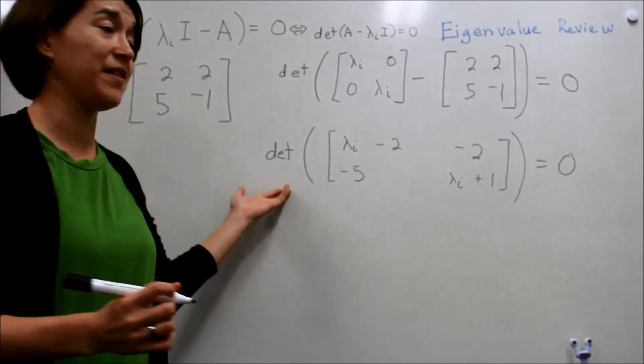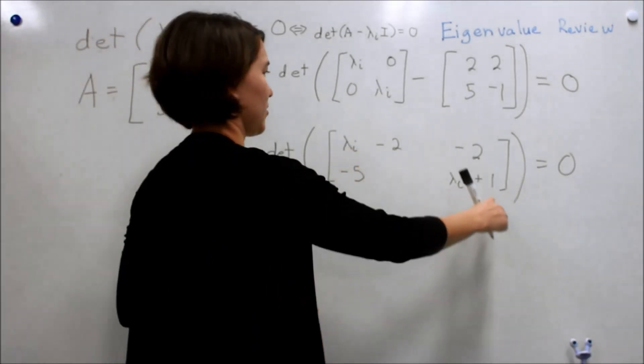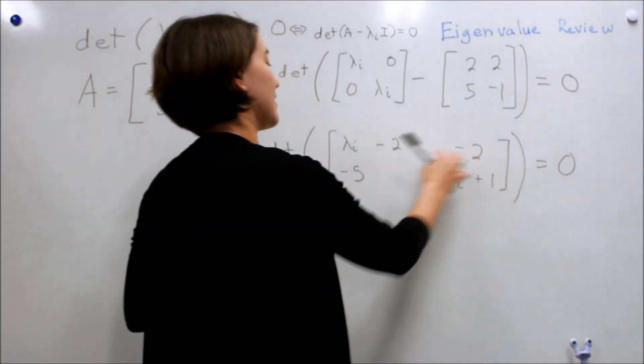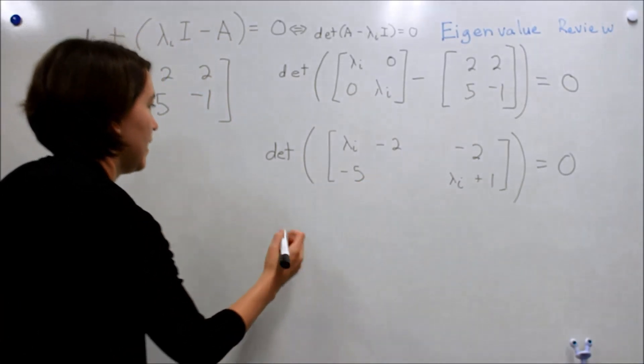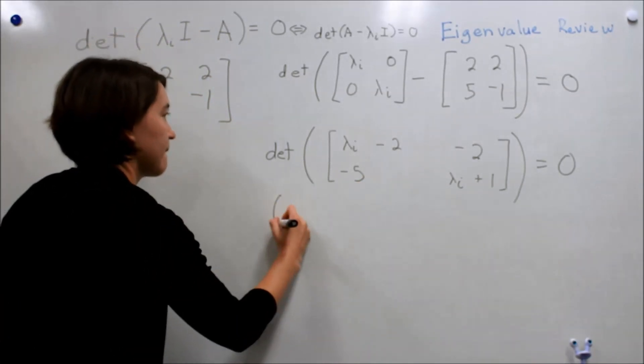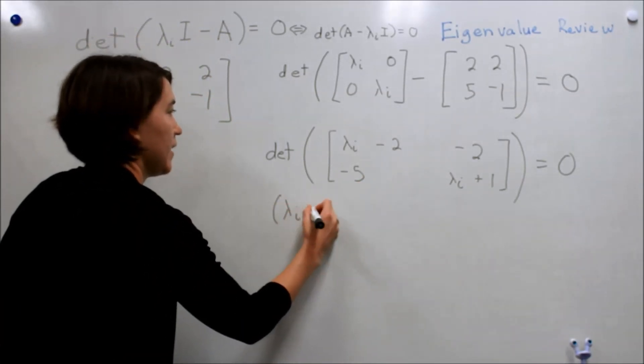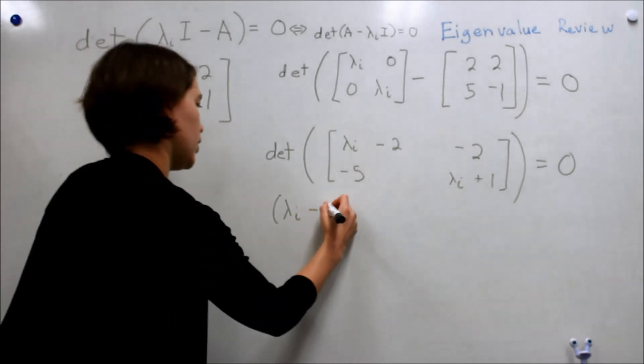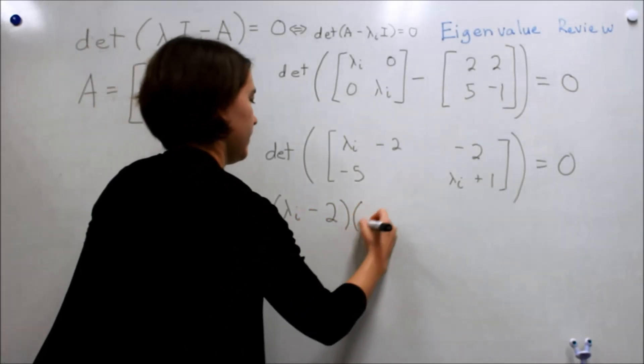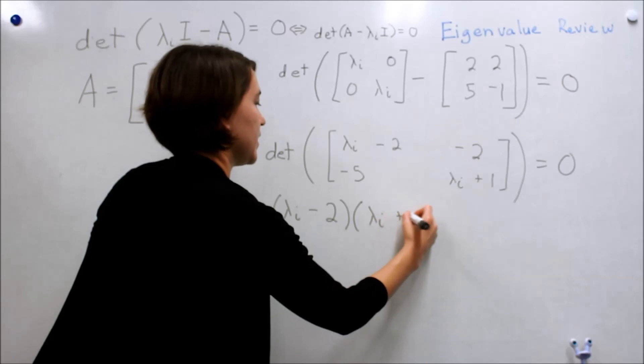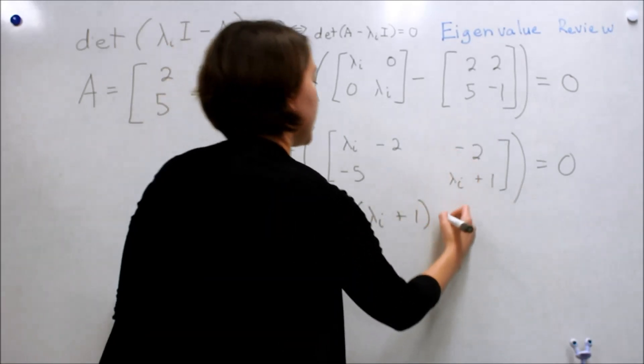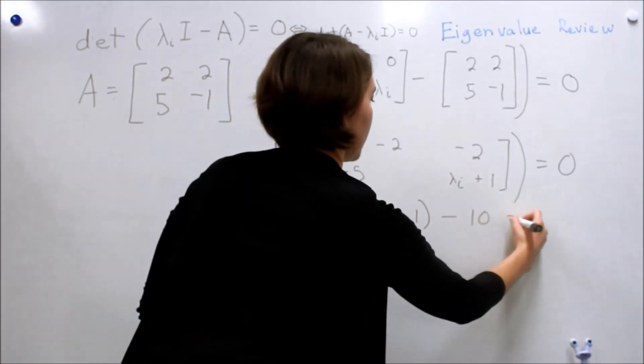Now we have to take the determinant, and I just remember it's like a little criss-cross, so this times this minus this times that. So let's write that out. Lambda minus 2 times lambda plus 1, and then minus 10, all equal to zero.